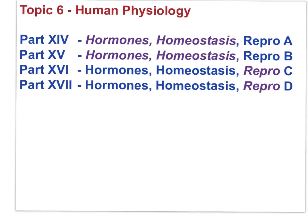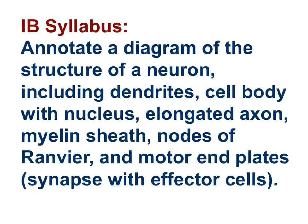Here is the second slide of the outline for all available movies for Topic 6, Human Physiology. Here is an IB syllabus statement covered in the last movie, Neurons and Synapses A. You should be able to annotate a diagram of the structure of a neuron, including dendrites, cell body with the nucleus, elongated axon, the myelin sheath, nodes of Ranvier, and motor end plates.